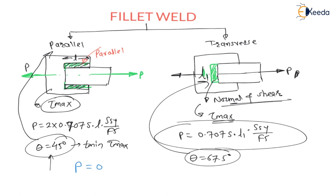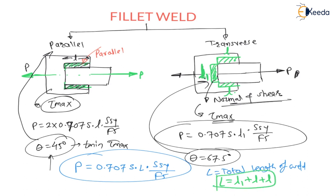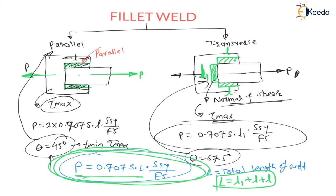In summary, the load carrying capacity is P = 0.707 · S · L · SSY / FOS, where P is load carrying capacity, S is plate thickness, L is total length of weld, SSY is shear yield strength, and FOS is factor of safety. If welding includes transverse length L1 and two parallel lengths L each, the total weld length is L1 + 2L. Thank you dear students — in the next lecture, we will see numerical problems on fillet weld.